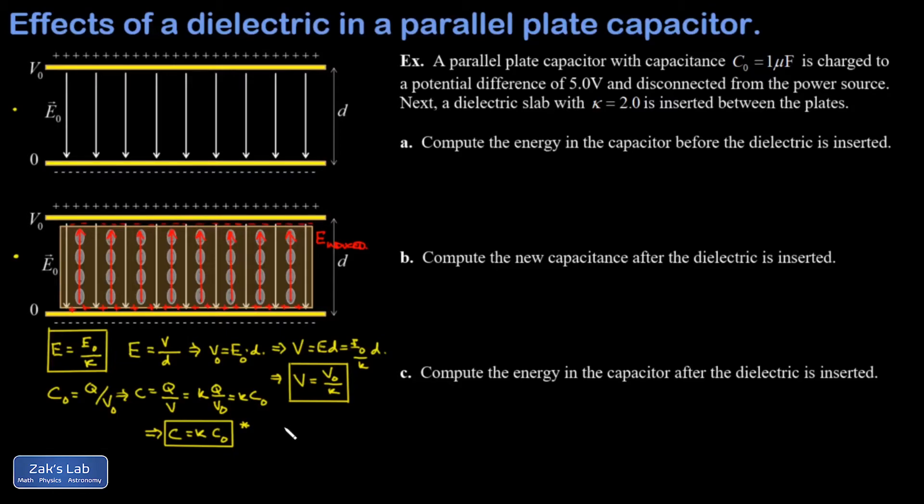For example, if you were given the dimensions of a capacitor and the dielectric constant between the plates, you could compute the capacitance based on the geometry of the capacitor. And our old formula was epsilon 0 A over d, and now to generalize I'm just going to put a kappa in there for the dielectric constant of the material between the plates.